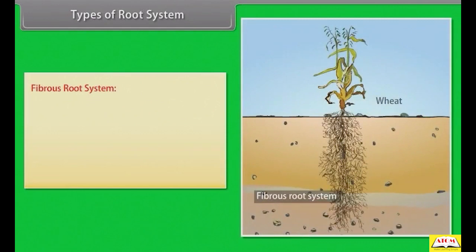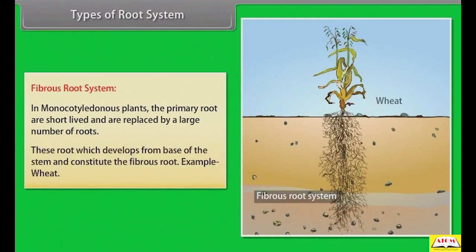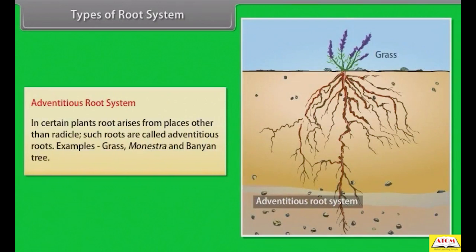In monocotyledonous plants, the primary roots are short-lived and are replaced by a large number of roots. These roots develop from the base of the stem and constitute the fibrous root system. Example: wheat. In certain plants, roots arise from places other than the radicle — such roots are called adventitious roots. Examples: grass, Monstera, and banyan tree.